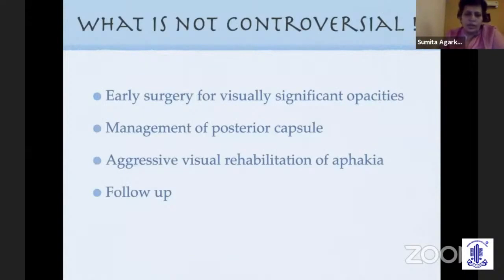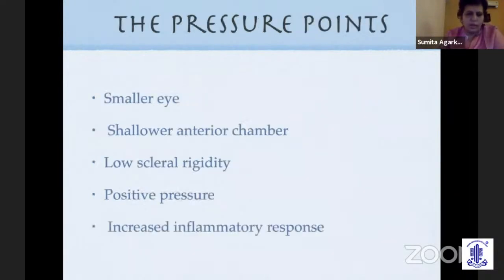Despite several controversies surrounding cataracts in children, we all agree that we need to manage them very aggressively if visually significant. Surgery is just the beginning of a very long road towards vision. The technical challenges when dealing with children include smaller eyes, shallower anterior chambers, very low scleral rigidity, positive pressure, and a much more unpredictable inflammatory response.